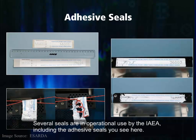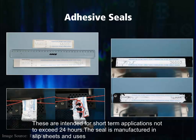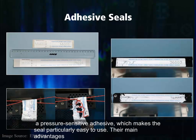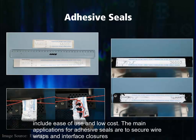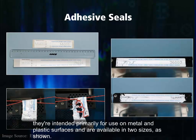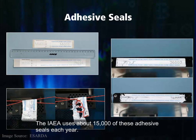Several seals are in operational use by the IAEA, including the adhesive seals you see here. These are intended for short-term applications not to exceed 24 hours. The seal is manufactured in slip sheets and uses a pressure-sensitive adhesive, which makes the seal particularly easy to use. Their main advantages include ease of use and low cost. The main applications for adhesive seals are to secure wire wraps and interface closures. They are intended primarily for use on metal and plastic surfaces and are available in two sizes. The IAEA uses about 15,000 of these adhesive seals each year.